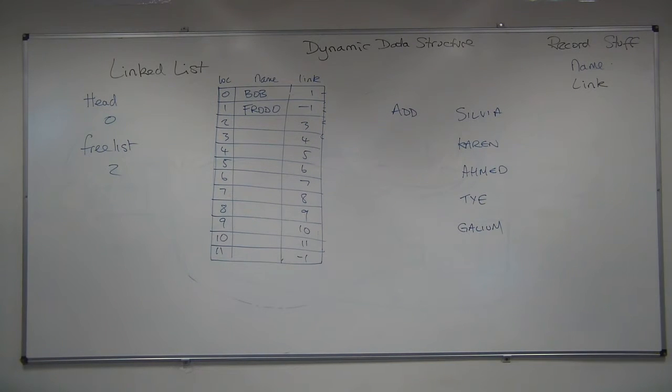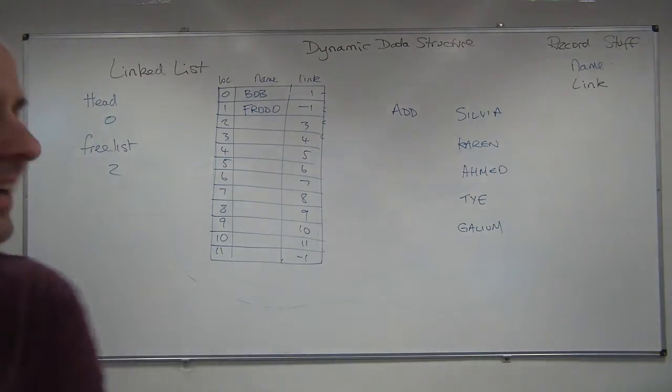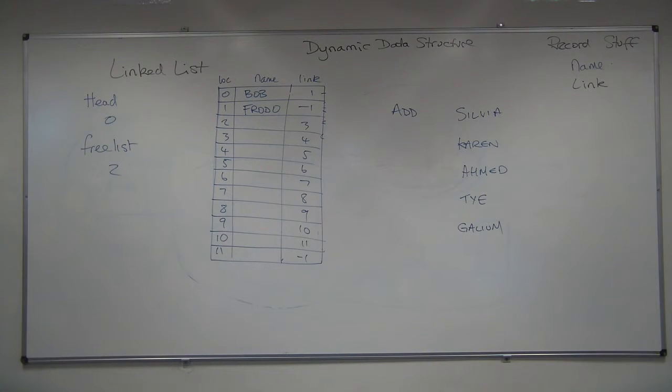We'll talk briefly about what this would look like if we were doing it in an array. And it's a pain. Gallium. I couldn't think of another name. That's liquid, really? Gallium, it's an element, isn't it?